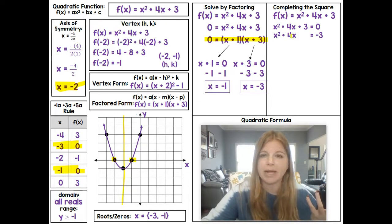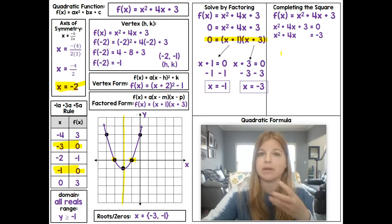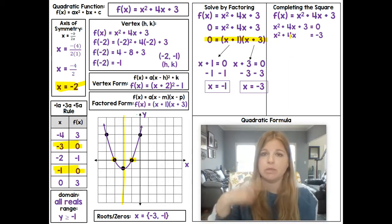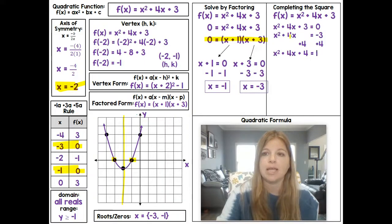If that 4x was actually 6x, we would take half of 6 is 3, and then square it to get 9, and we would add 9 on both sides. But here we're looking at 4. We take half of it, which is 2. We square it, which is also 4. And we add that on both sides to get our new equation.